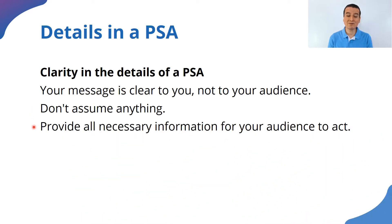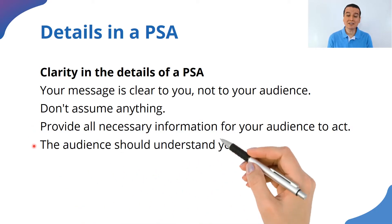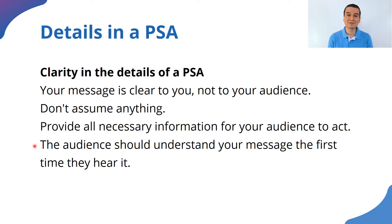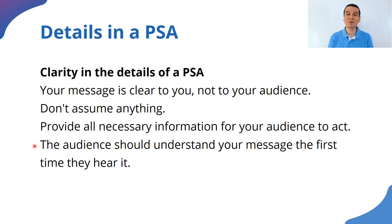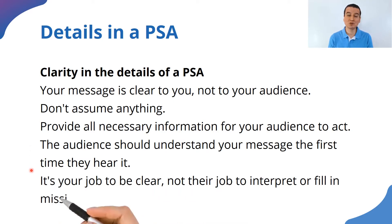Next, provide all necessary information for your audience to act. If you want them to do something, give them the directions, give them all the specifics — not just 'do something' if you're not saying specifically what you want them to do. Next, the audience should understand your message the first time they hear it. That means it has to have details, but we don't need to clutter it with so much information that they have to listen to it multiple times before they get it. They have to understand it the first time, because chances are one person will hear your announcement only once in their life and they should have enough information to understand it and also to act upon it.